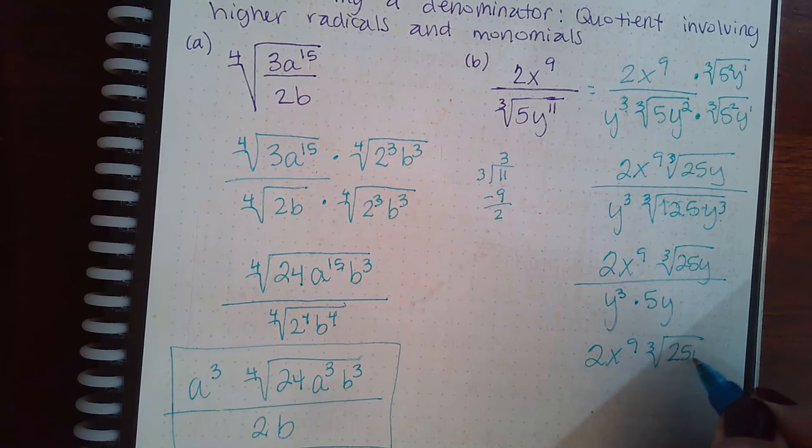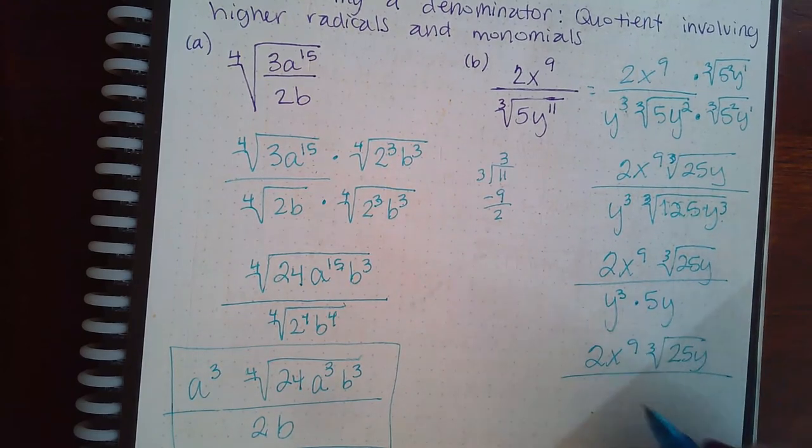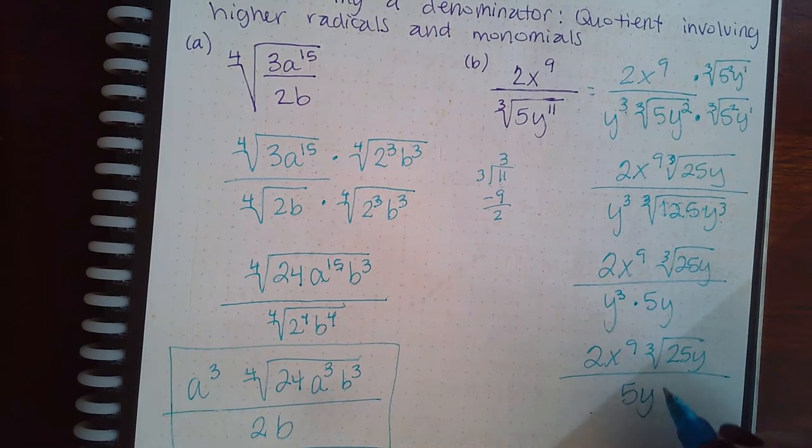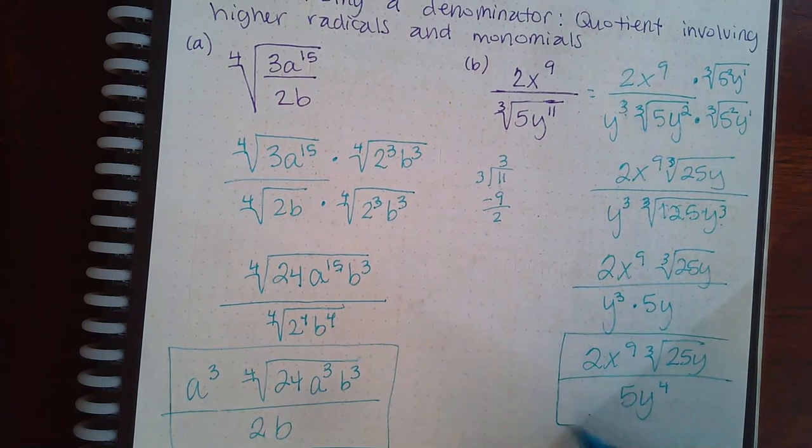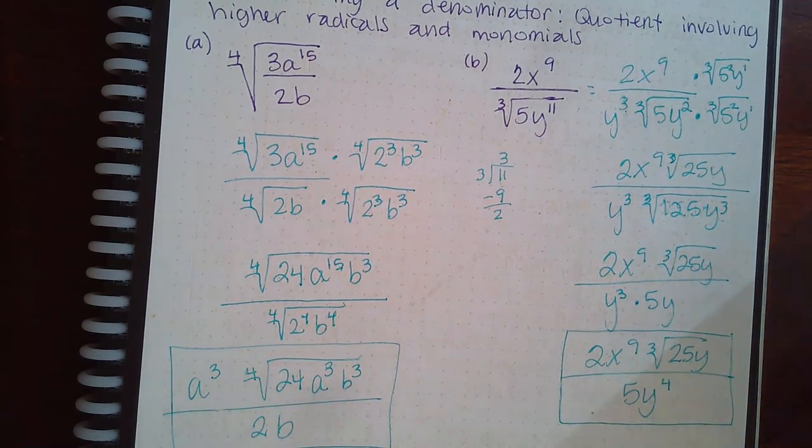The only thing left to do is to multiply this together. So we get 5 y to the 4th power. And if these could reduce, you would try to reduce them, but they cannot. So that is the final answer. Thank you.